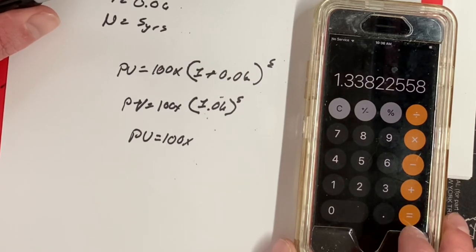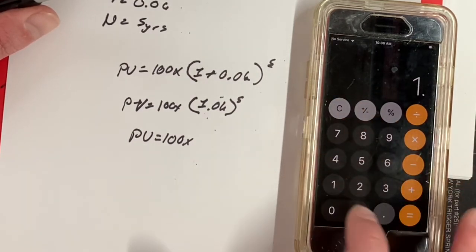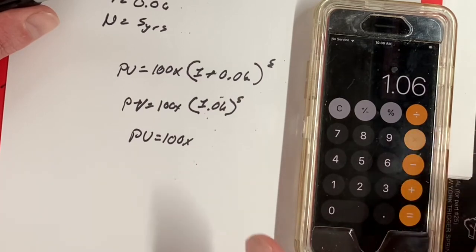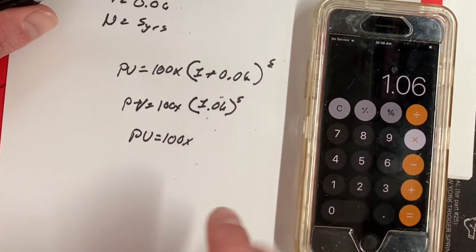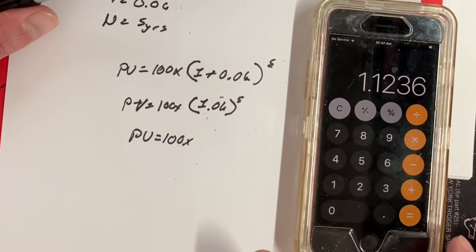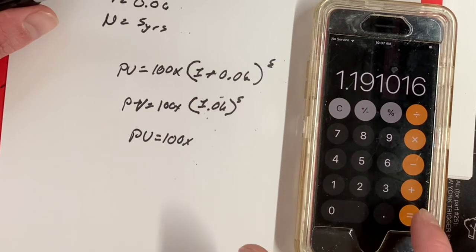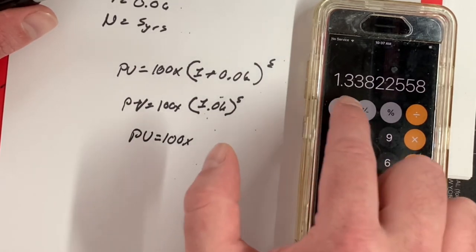I hit this button four times for the 5th power, which means we'll do it again. 1.06 times 1.06 is to the first power. Now we need to go to the 2nd power, 3rd power, 4th power, 5th power. And our number is right there.